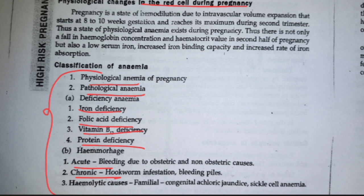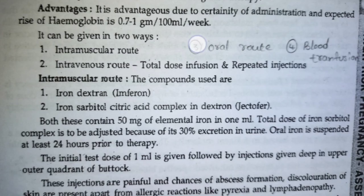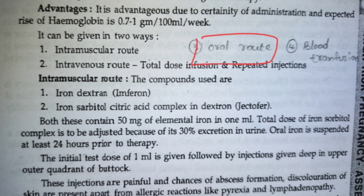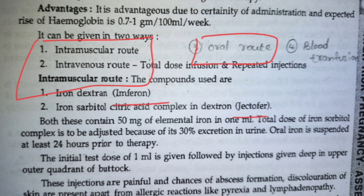Management of anemia: starts with oral ferrous tablet. If the patient has malabsorption or severe anemia that oral therapy cannot address, we proceed with IM or IV injection routes. If the condition is very severe, blood transfusion is performed. If there are any reactions to injections, we stop immediately and switch to alternate sources.